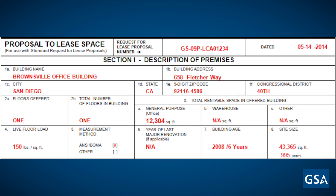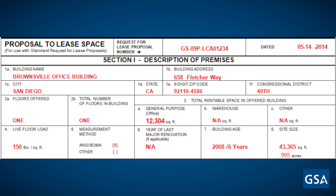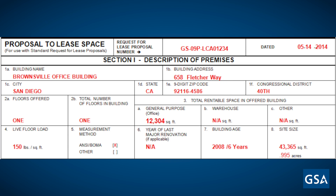In Box 1A through F, you will list the building name if applicable, address, city, state, zip code, and congressional district as shown in the example. In Box 2, you would state the total number of floors being offered to the government and total floors in the building. In Box 3, you will list the total rentable space in the building and indicate if it's office, warehouse, or other type. In our example, the building has a total of 12,304 square feet of office space.